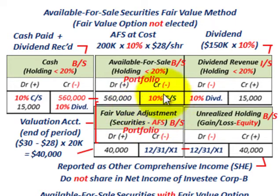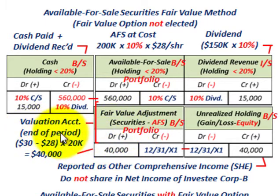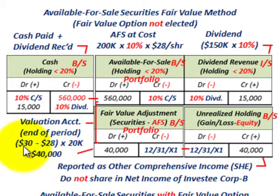The key distinction between the regular fair value method and the fair value option: with the fair value method, you set up a valuation account that increases or decreases your available-for-sale securities on a portfolio basis. You don't record changes in value directly into the available-for-sale cost account; instead you set up a fair value adjustment on a portfolio basis. At period end, the market price is $30 versus cost of $28 times 20,000 shares, giving a $40,000 increase. Market price exceeds cost, so we debit the fair value adjustment for $40,000.